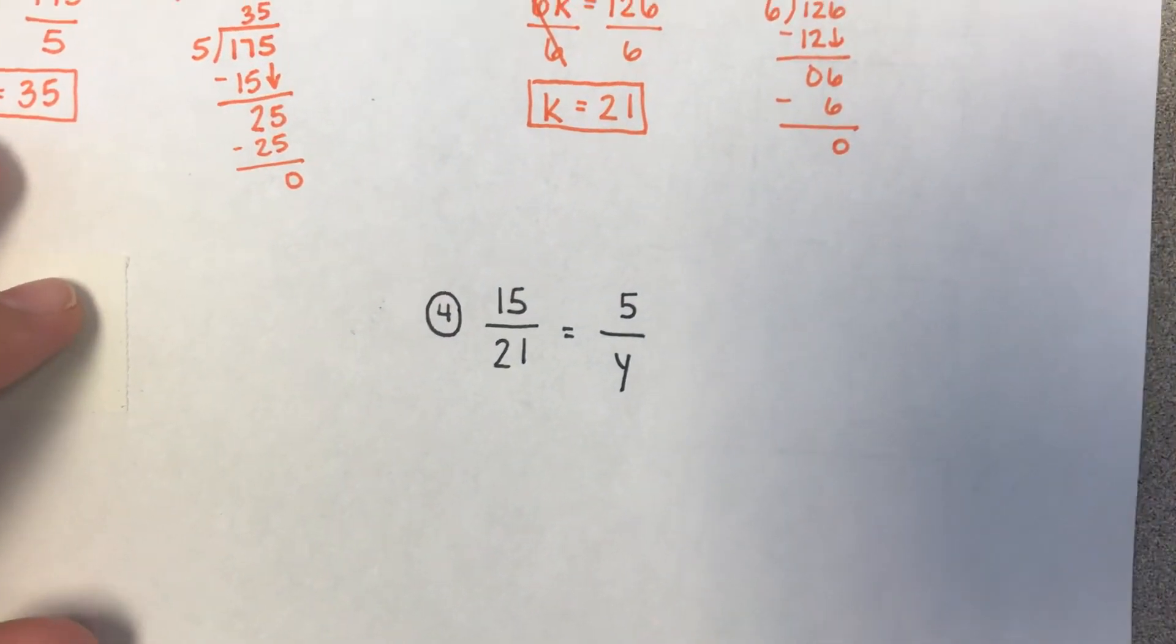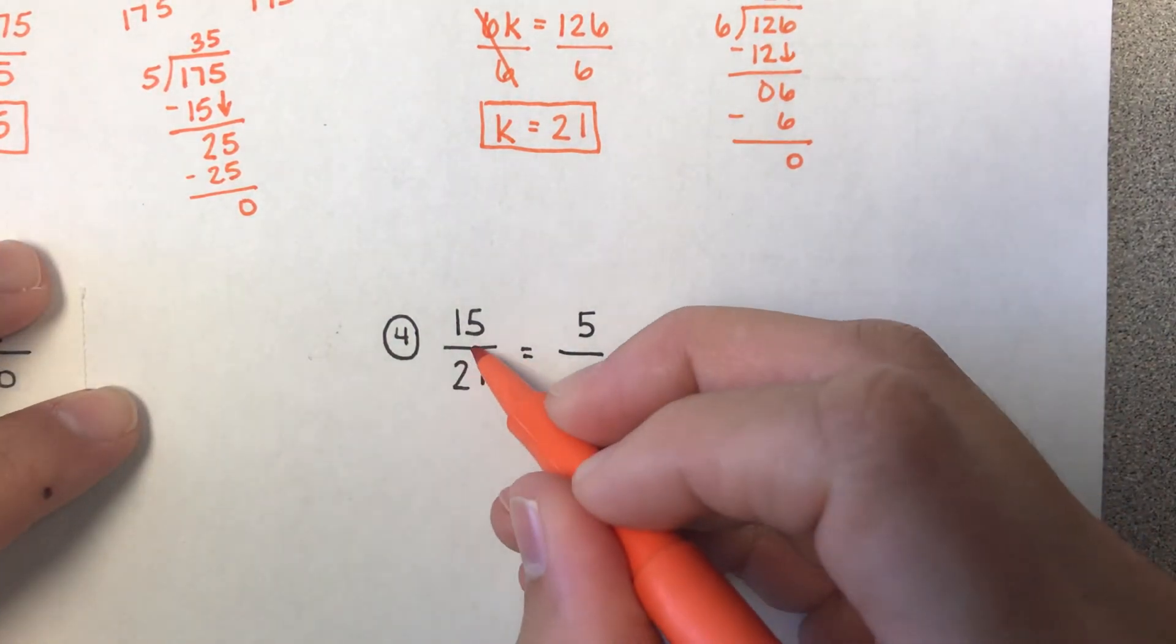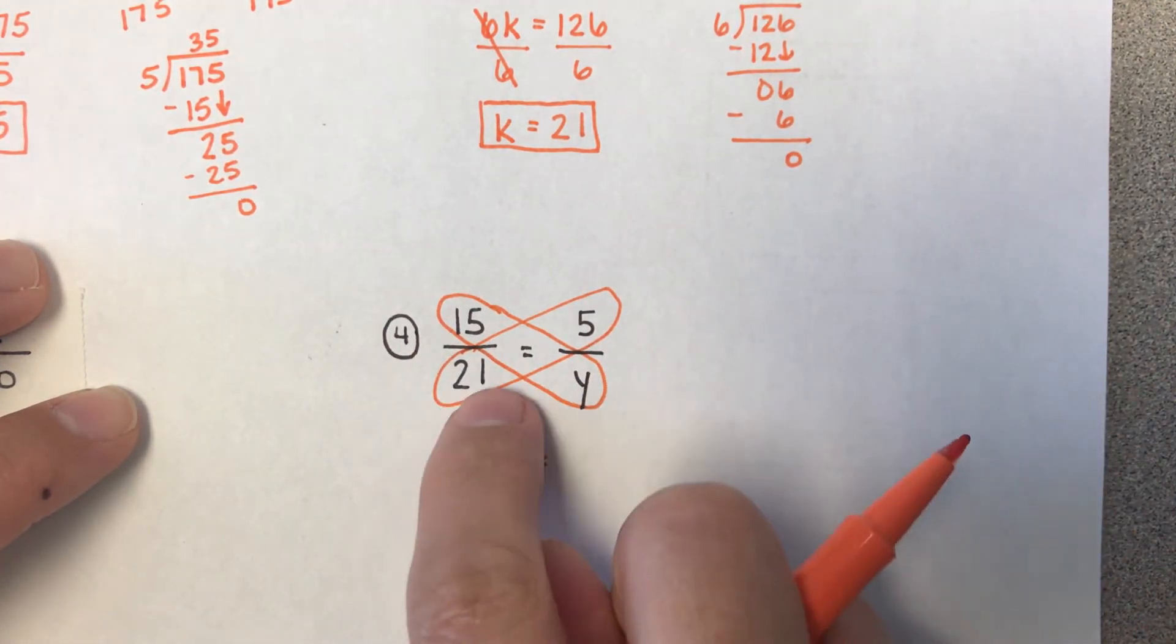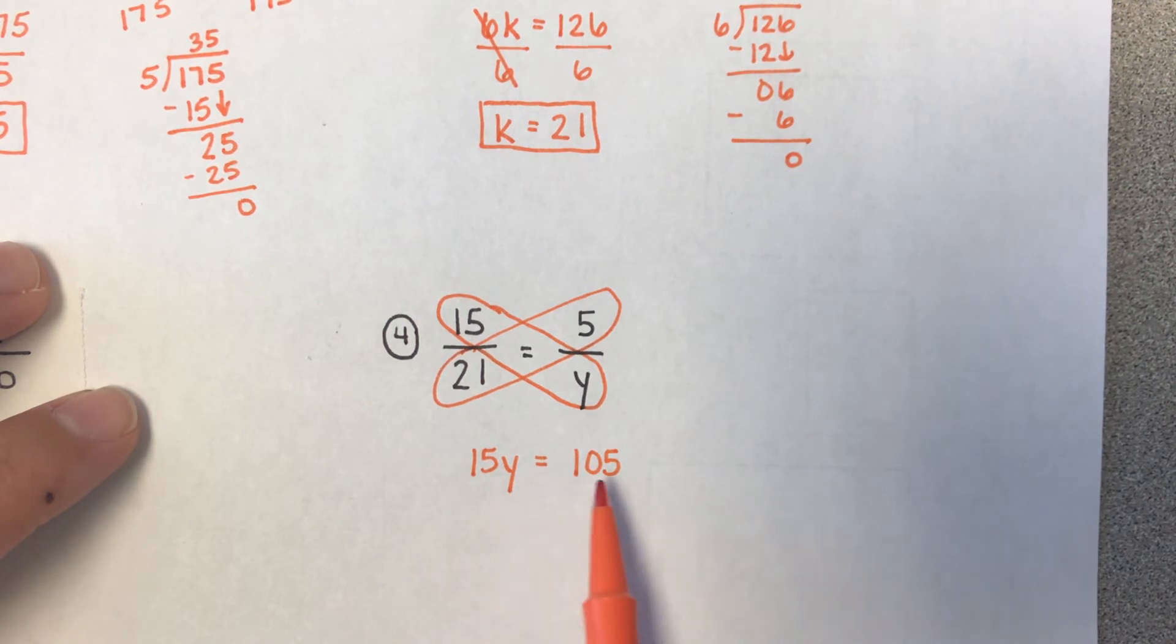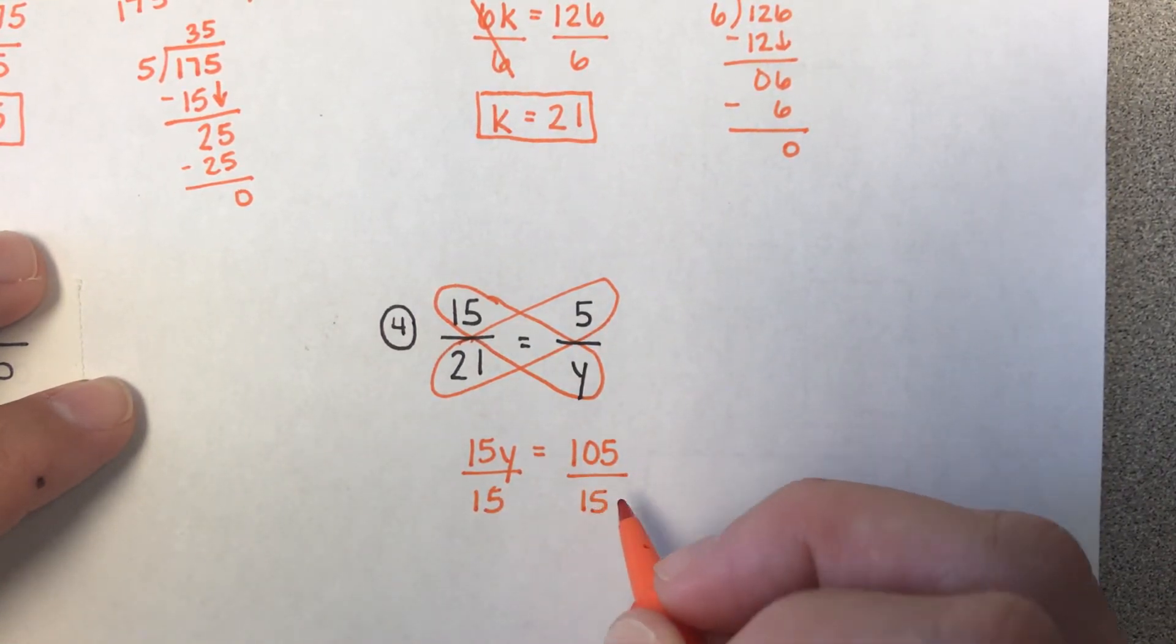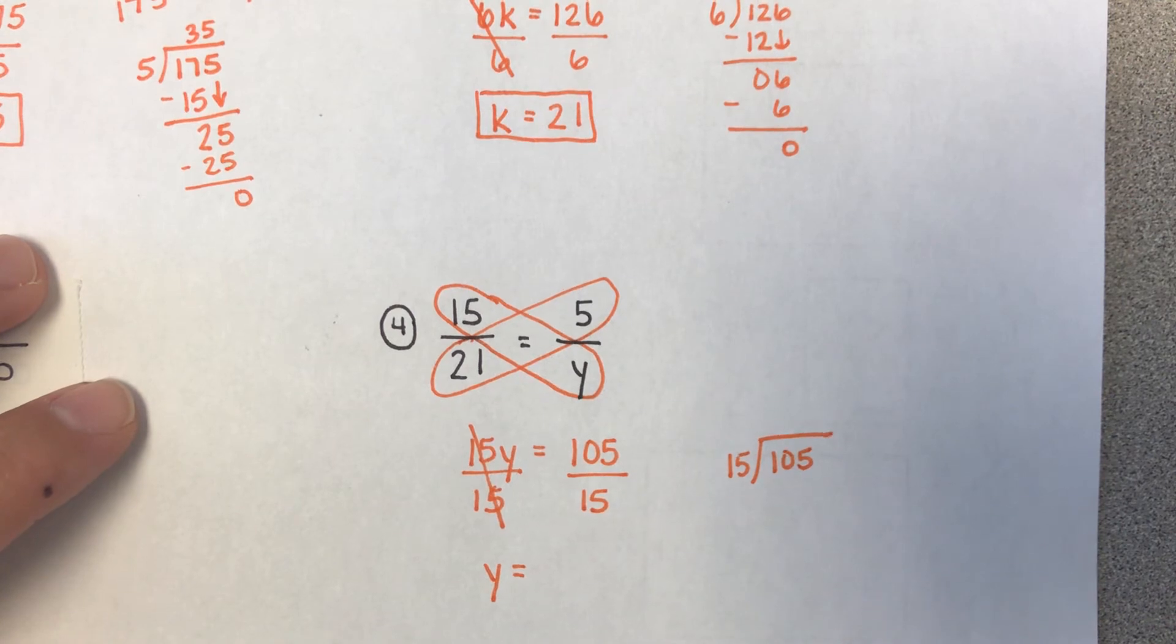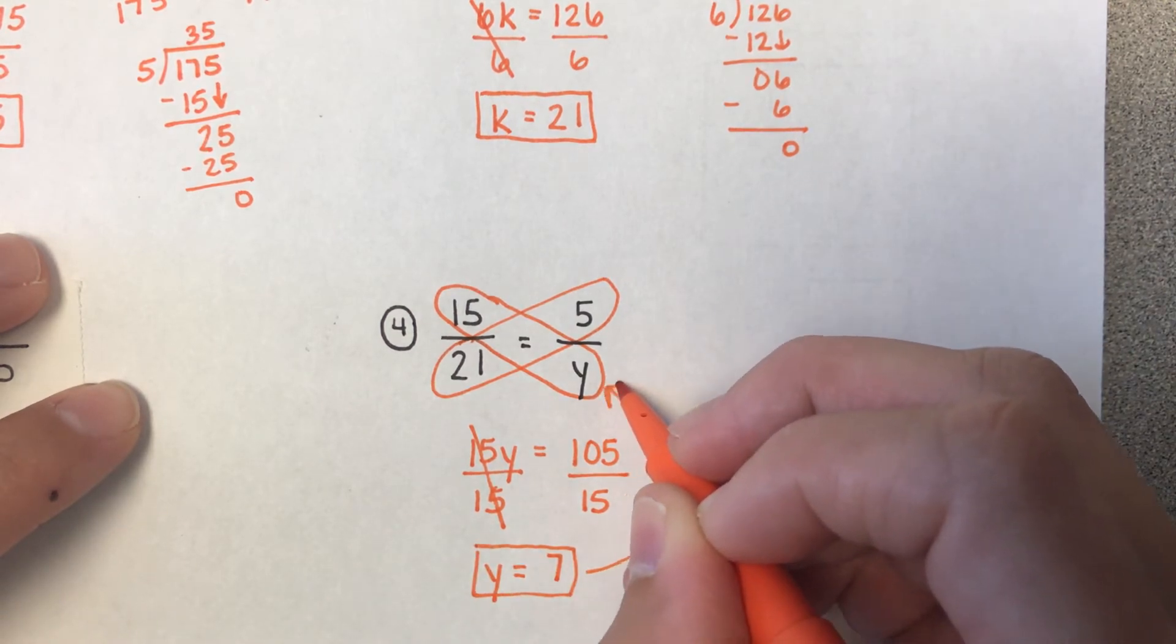Alright, let's scroll down right here to this proportion right here. So let's solve this one. Remember, we just cross multiply. So 15 times y just gives me 15y. 21 times 5 gives me 105. So something times 15 is going to give me 105, but I just got to figure out what that something is. So all I do is divide. Remember, these two 15s right here cancel out. I'm left with y over here. If I do 15 into 105, luckily it comes out evenly to be 7. So 7 goes in place of this y right here.